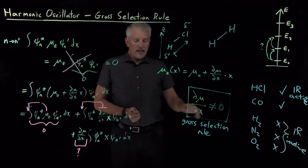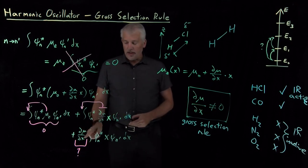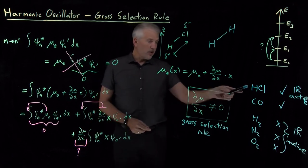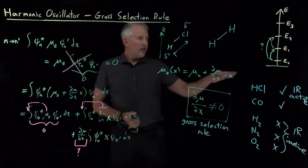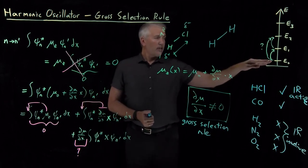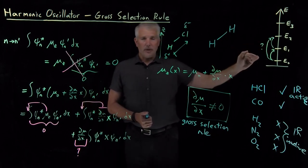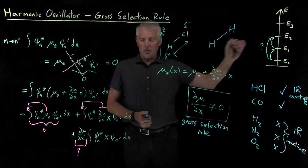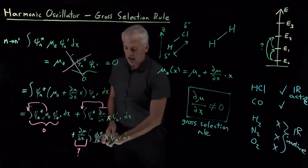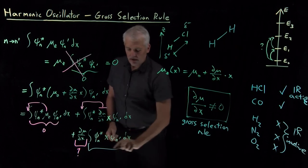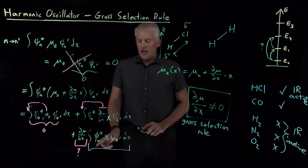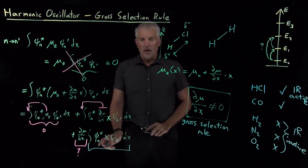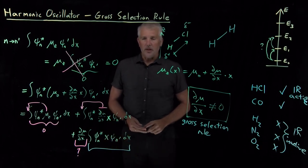That tells us how to determine which molecules can absorb infrared light at all, but we haven't yet made progress on knowing which pairs of energy levels we can make transitions between. To do that, we'll go back and look at the integral ∫ψₙ* x ψₙ′ dx and find out which values of n and n′ leave this integral zero or non-zero. That will tell us the rest of the selection rules for the harmonic oscillator.